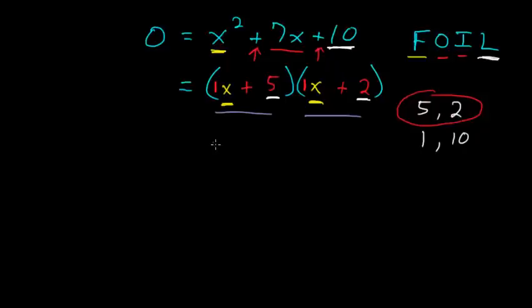So once we have the two binomials, we can figure out which values of x would make this entire equation equal to 0. And for that to happen, we need to figure out what x value can we put in here to make this parenthesis on the left equal to 0. In this case, negative 5 would work. And if we put in on the right set of parenthesis a negative 2, that would work as well. So the final solutions to this are x equals negative 5 and negative 2.